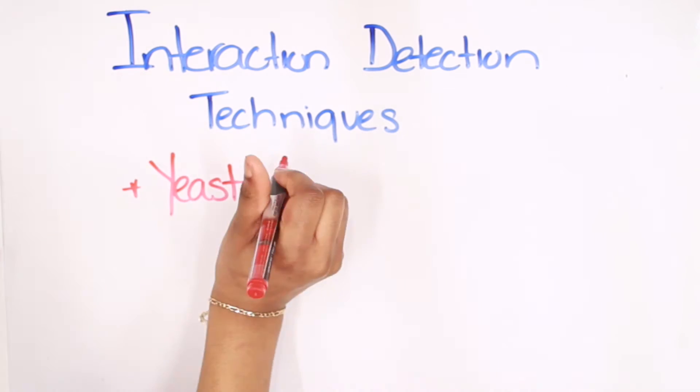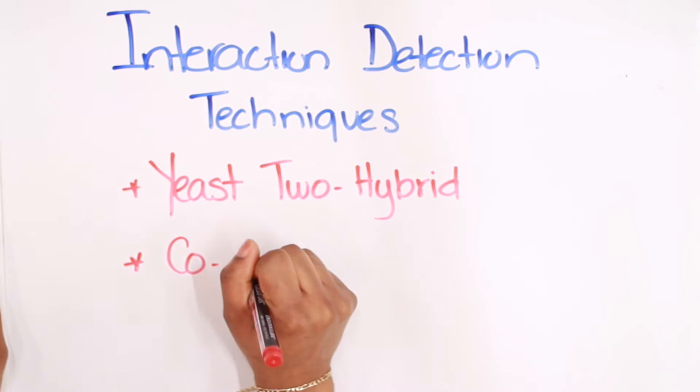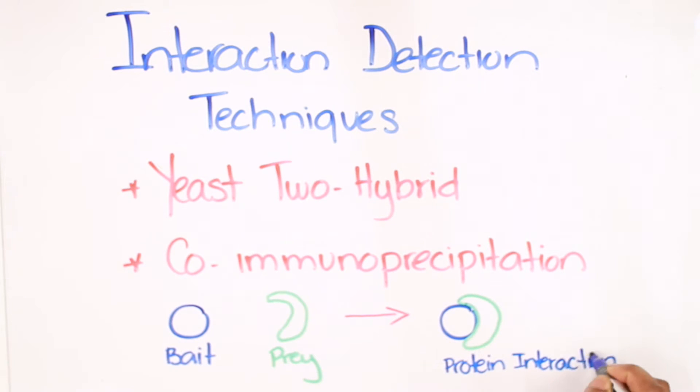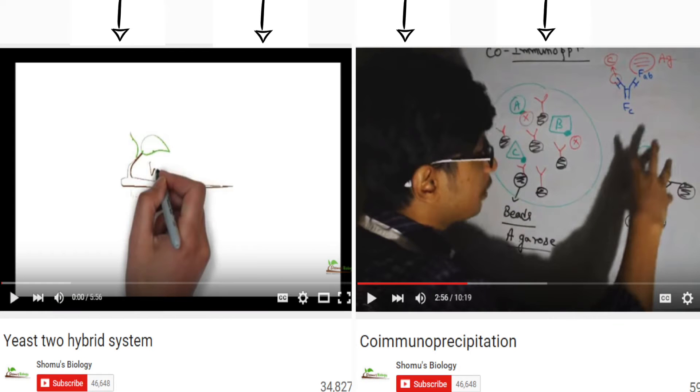Several interaction detection techniques exist, but the two most popular remain yeast two-hybrid and co-immunoprecipitation. The general principle is that you have a bait protein, and you are trying to find what other proteins interact with it, which we will call prey. For more information on these techniques, check out those links.